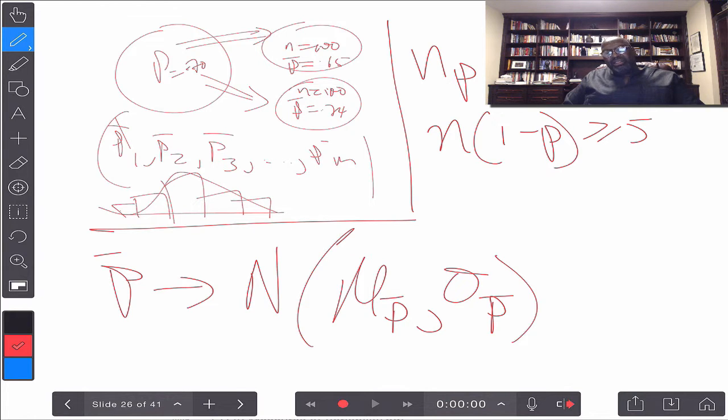If the true population proportion is 0.7, and I'm sampling 100 individuals, 70% of 100 is 70. That's greater than 5. And then, 1 minus 70% is 30%. 30% of 100 individuals. That is also greater than 5. What that tells me, then, is I can approximate the sampling distribution as a normal distribution.